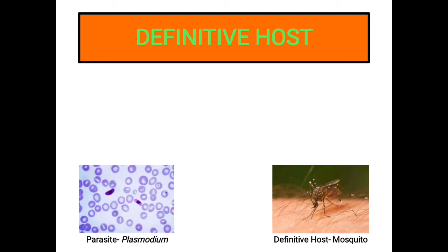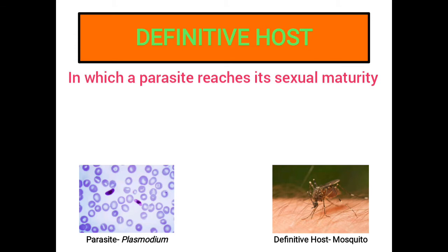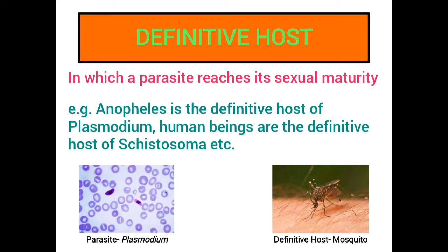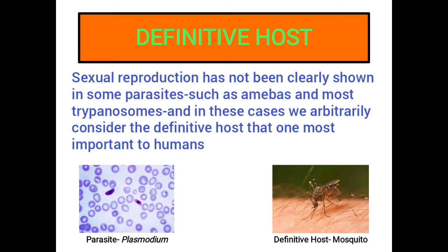I will discuss different types of host with examples. Definitive host: This is a host in which a parasite reaches its sexual maturity. For example, the Anopheles mosquito is the definitive host for the malarial parasite Plasmodium. Sexual reproduction has not been clearly shown in some parasites such as amoebas and most trypanosomes, and in these cases we arbitrarily consider the definitive host to be the one most important to humans.